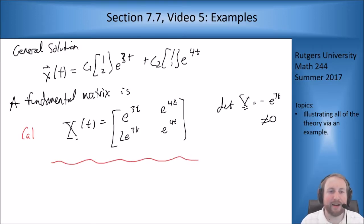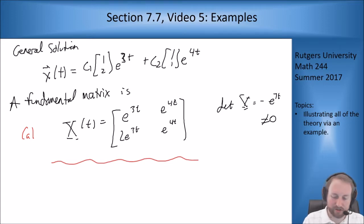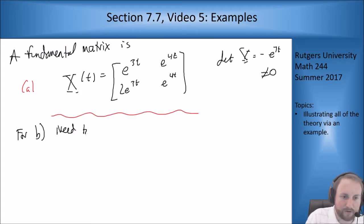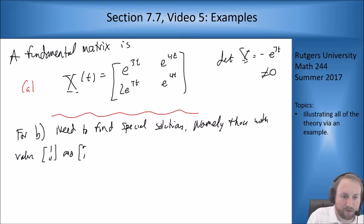For part B, I want the fundamental matrix that equals the identity at t equals 0. Plugging in 0 to the matrix from part A gives [[1,1],[2,1]], not the identity. So I need to find special solutions — those with initial values [1, 0] and [0, 1] at t equals 0.